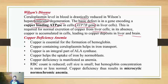Liver and brain are the areas majorly affected in Wilson's disease. Just remember: ATP7B gene, ceruloplasmin level is reduced but copper level is increased, leading to problems in liver and brain.